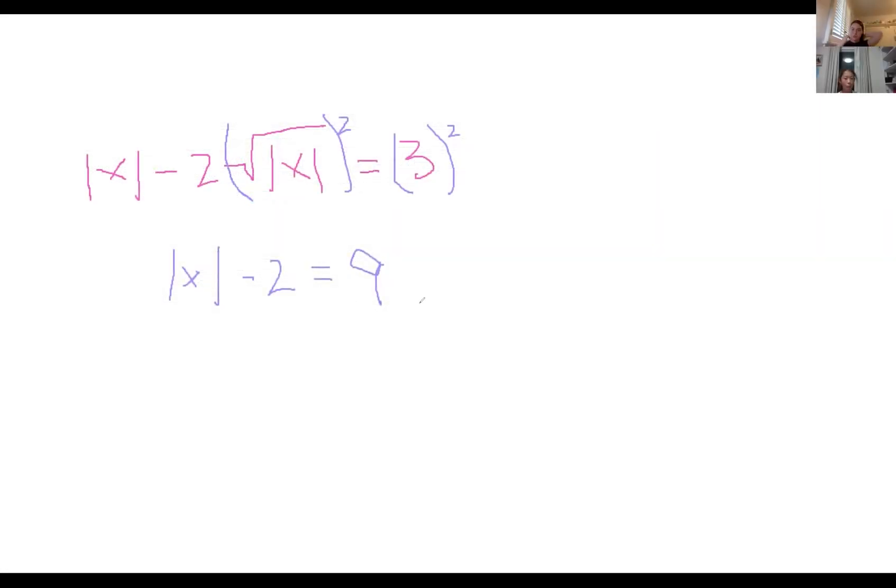And then how would you from here, how do you think you would isolate x? You know that the square root of like 25 is 5 times 5, right? Yeah. And it's two fives.